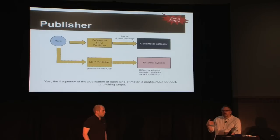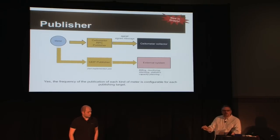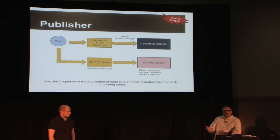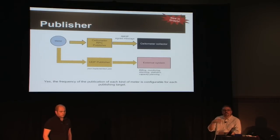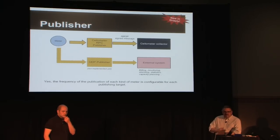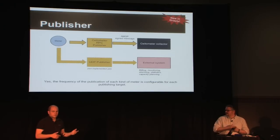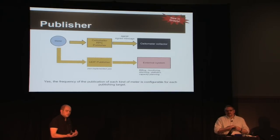When you're doing metering for billing, you absolutely don't want to lose data, so you use a guaranteed message delivery mechanism. However, when you're doing performance statistics, you don't mind losing one or two samples and you want to transmit as much as you can using the available bandwidth. That's why having multiple publishers helps — you can fetch the same measures and send them more regularly to a performance statistics system.